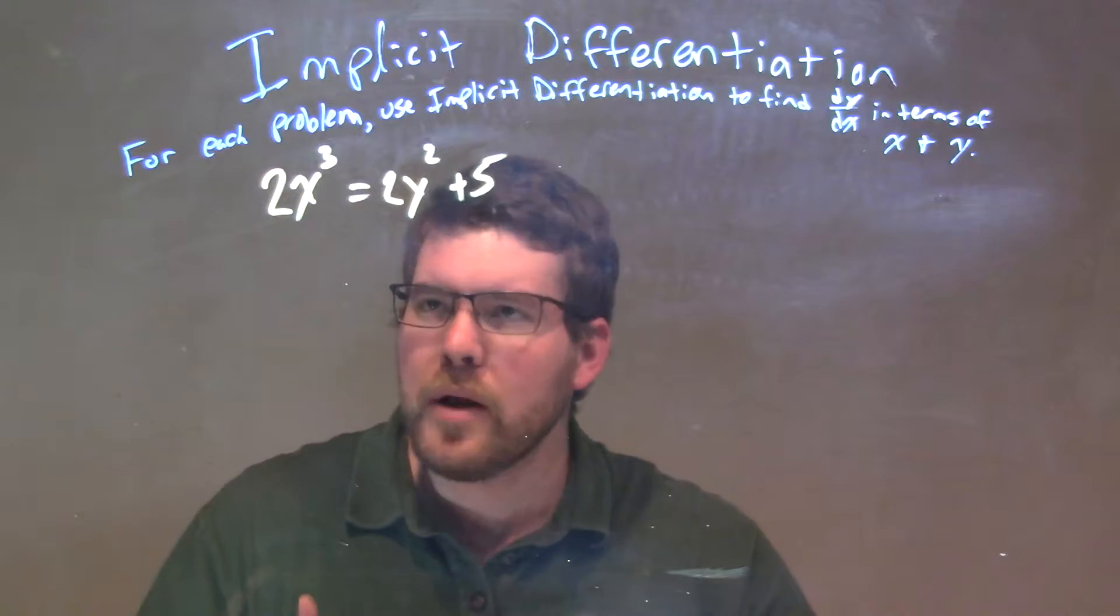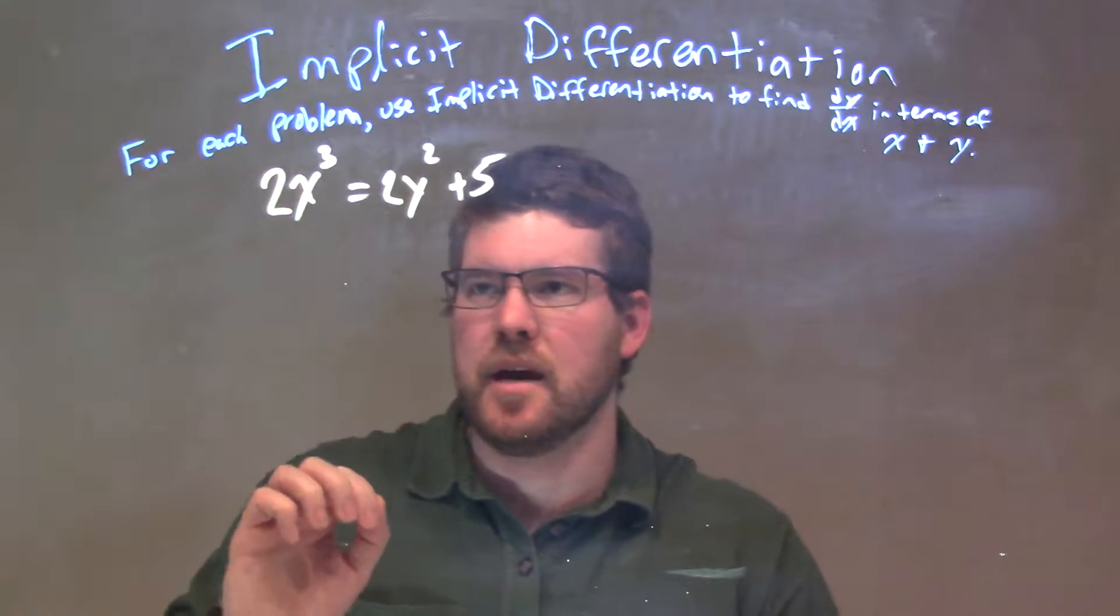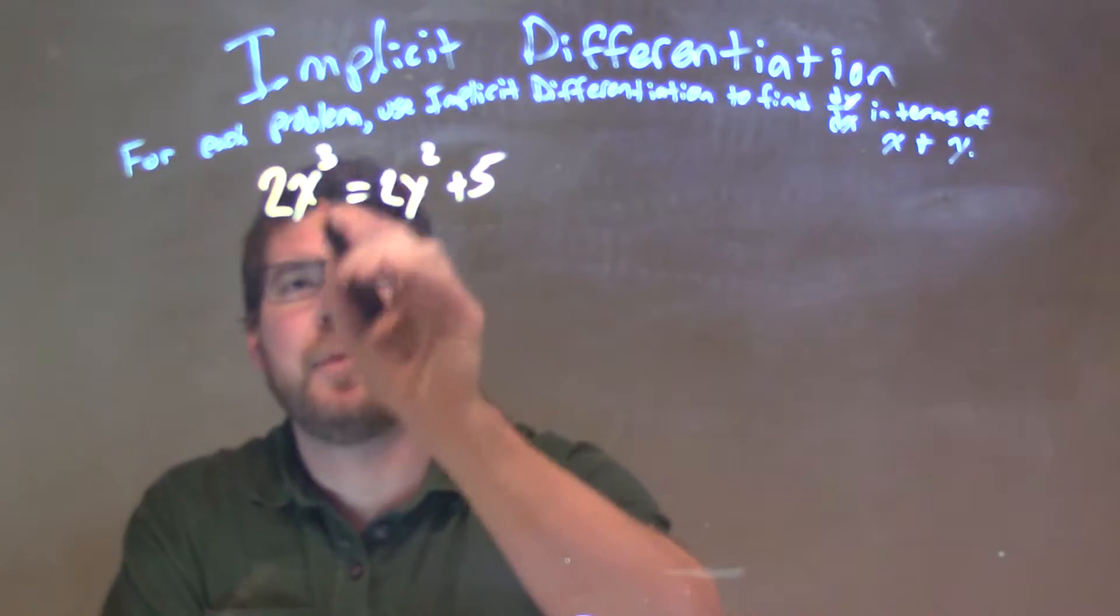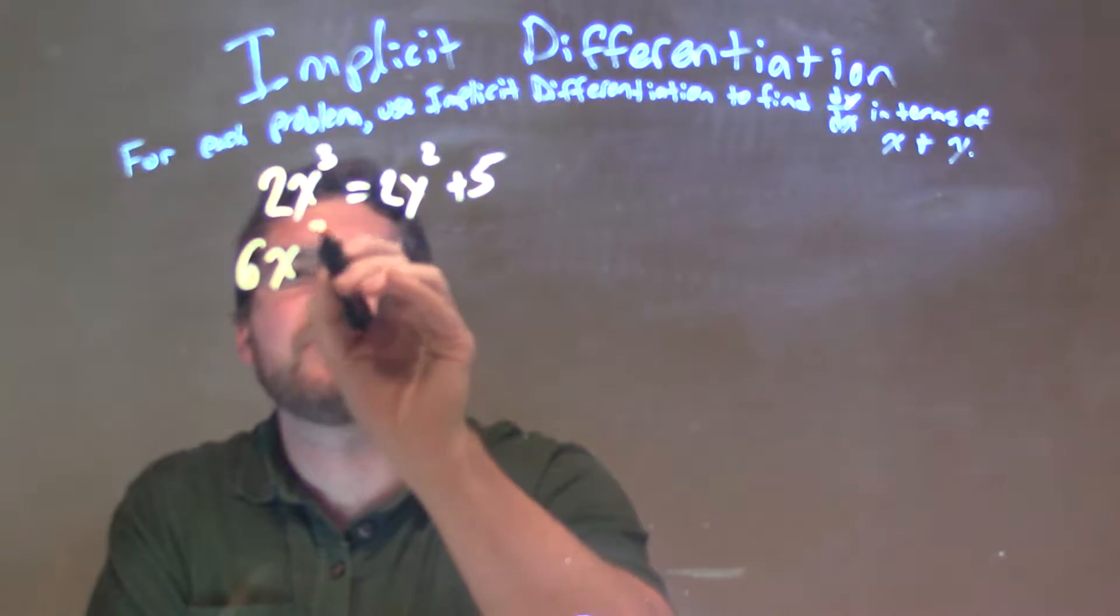Well, if I want to do this, what I do is: on the left-hand side here, I treat 2x³ just like I normally would. I would have ignored the y and said, okay, bring down the power—6x².